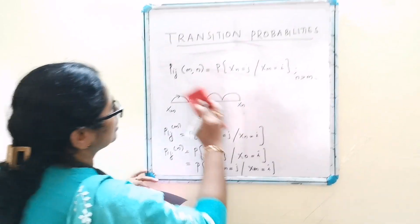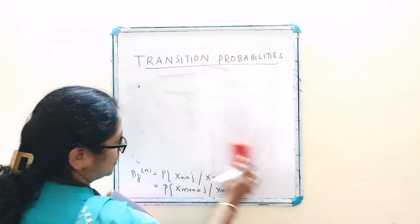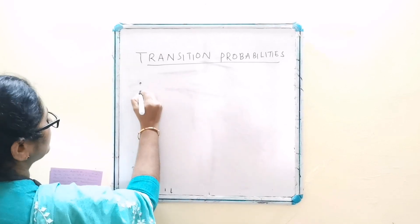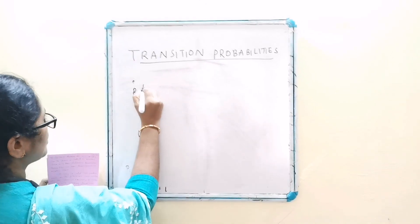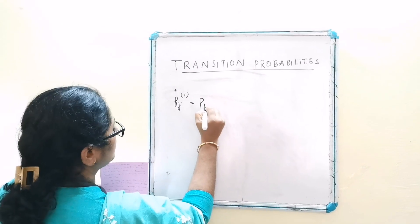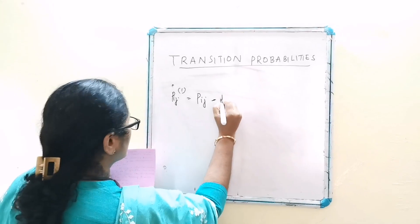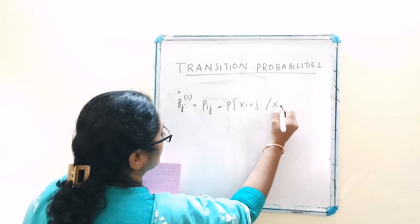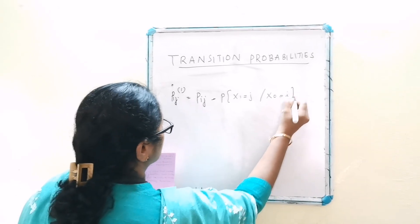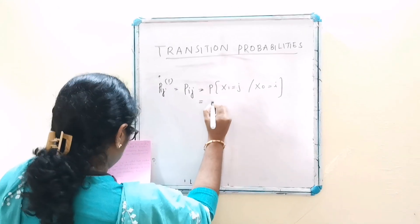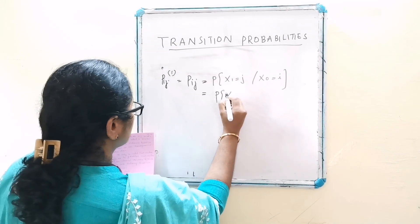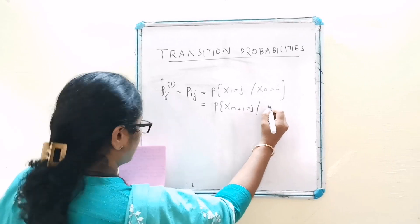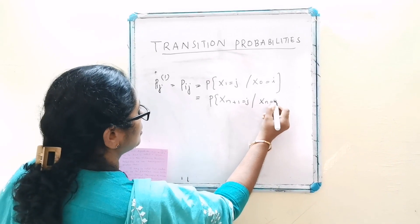Or pij(1) is equal to pij, and that is equal to probability of X1 equals j given X0 equals i. And that is equal to probability of Xn+1 equals j given Xn equals i.